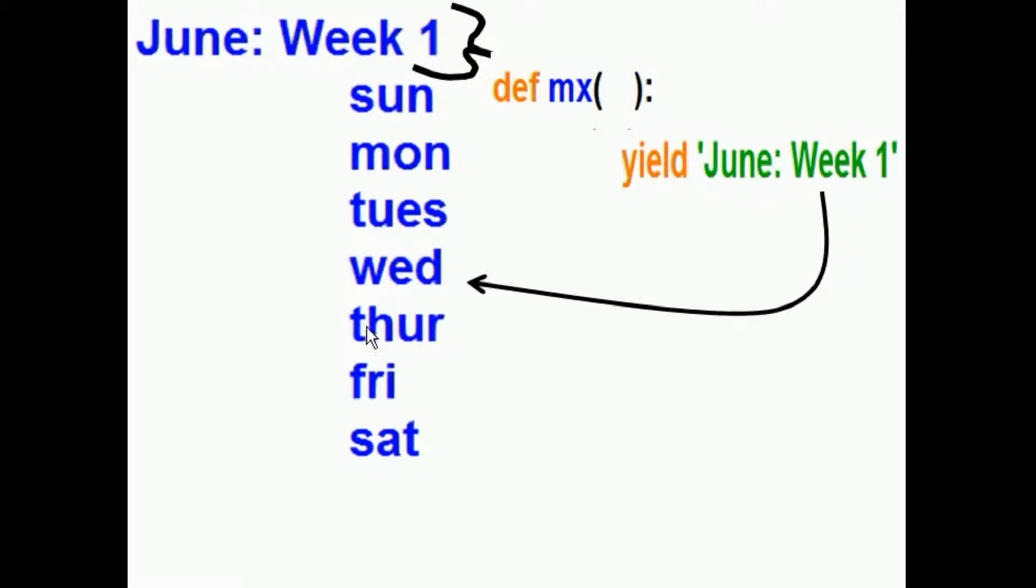Until it finally all gets printed out nice and neat. I'd like that. How would I go about doing that? Well, first, I'd have to pass the name of the function that does the printing out of the days to my month generator function. And I'll put that into a variable called DF.